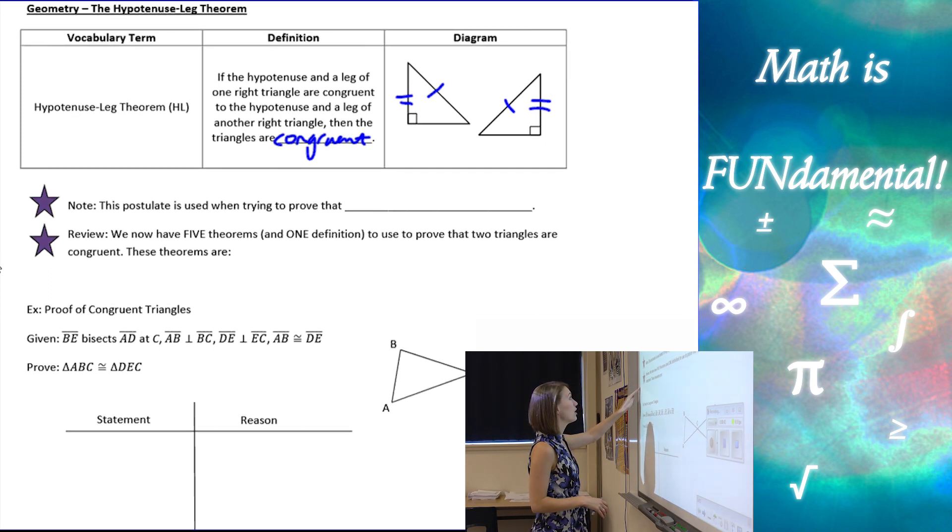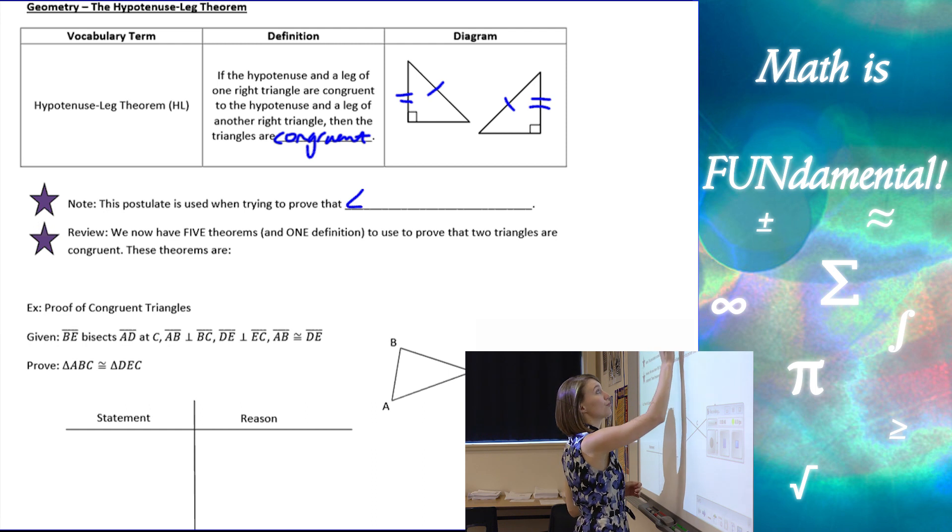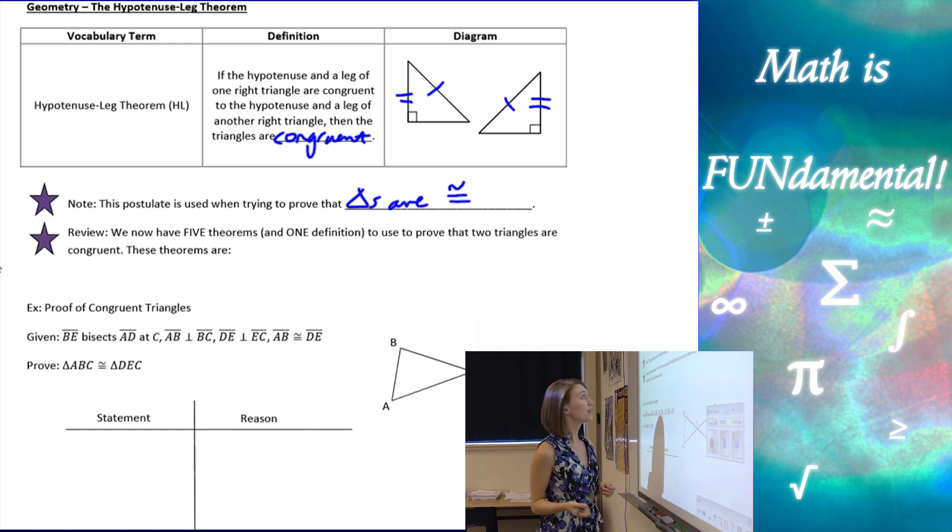Let's look at a little bit of a note. This postulate is used to prove that triangles are congruent and we now have five theorems and one definition to use to prove that two triangles are congruent. Review here from our previous lesson videos.